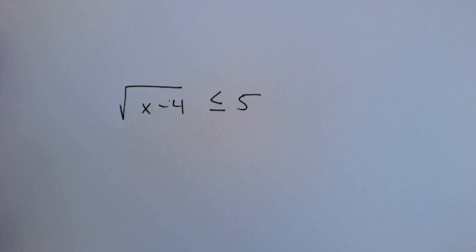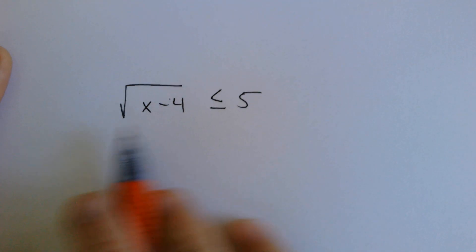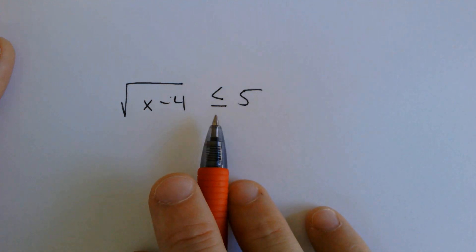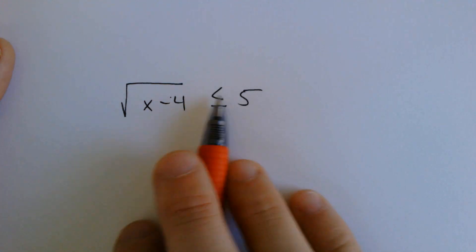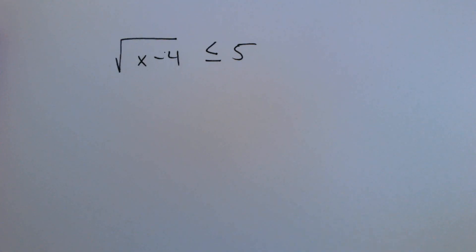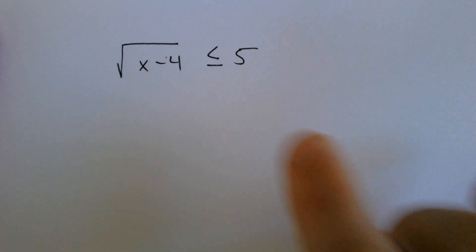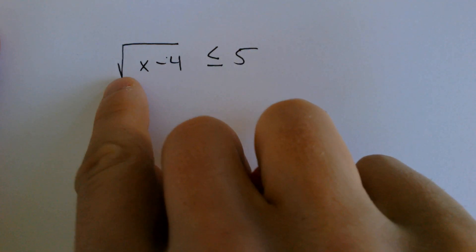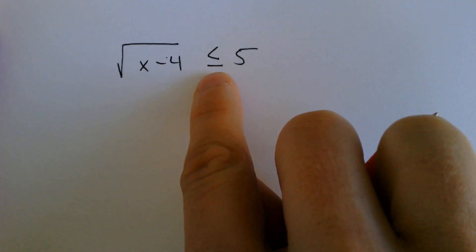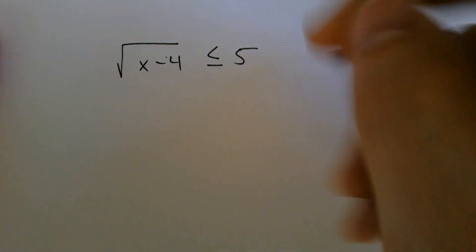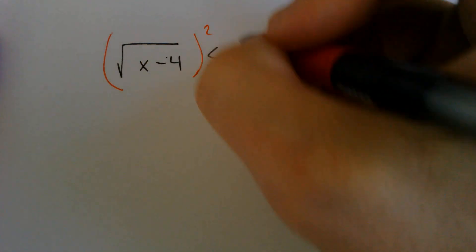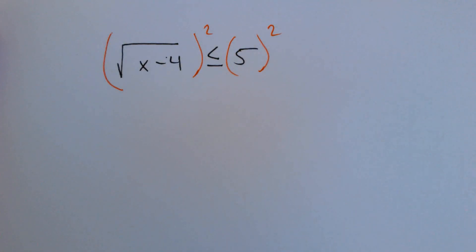Hello, and welcome back to another episode of Math with Sohn. Today we're going to be solving square root inequalities, that inequality symbol. You do them almost the same way as regular equations where you want the square root completely by itself, and it either being equal to a number or some other thing. And to get rid of it, you square both sides.